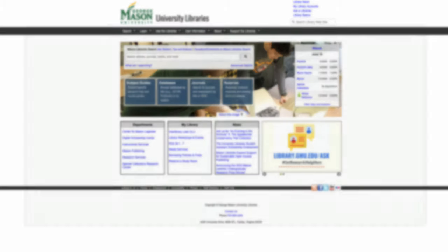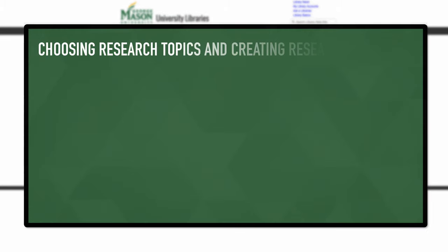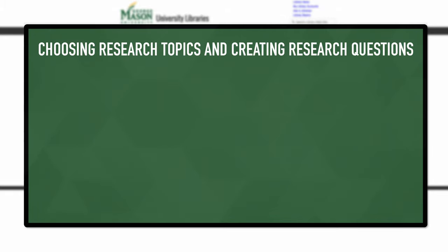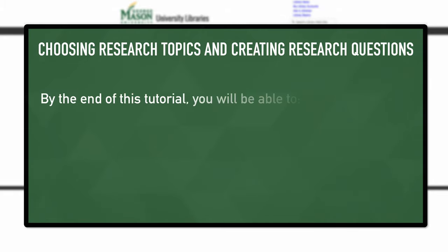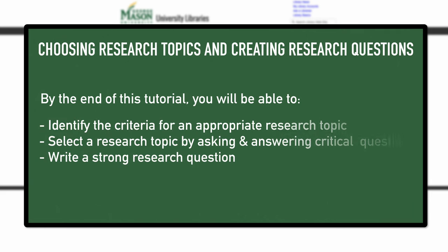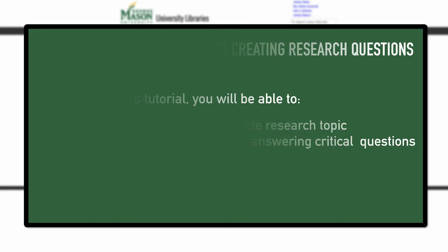Welcome to the Mason Libraries tutorial on choosing research topics and creating research questions. By the end of this tutorial, you will be able to identify the criteria for an appropriate research topic, select a research topic by asking and answering critical questions, and write a strong research question.